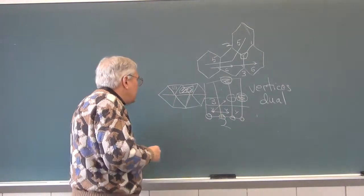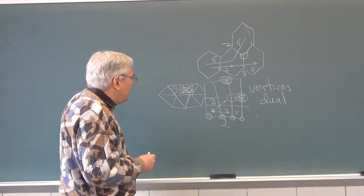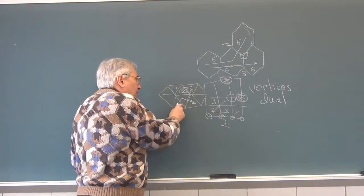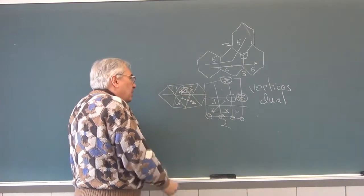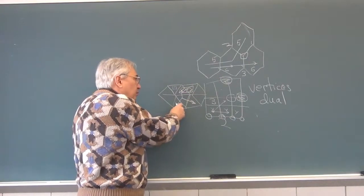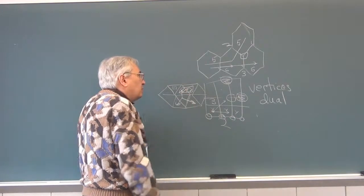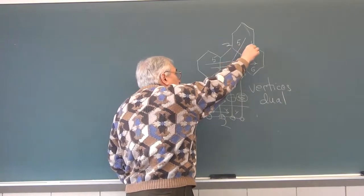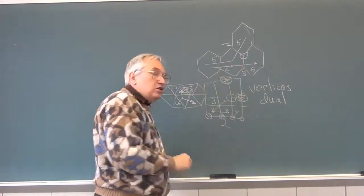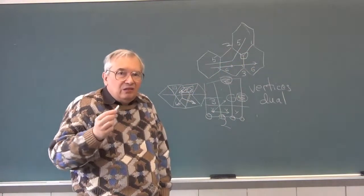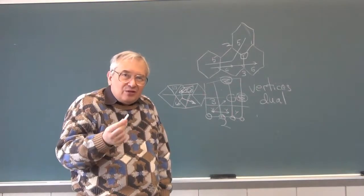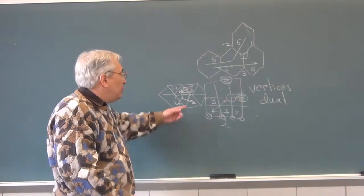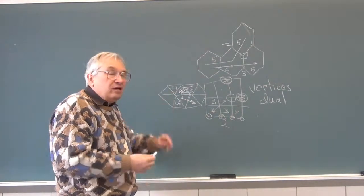You might ask, have we seen something with three neighbors? Looking at equilateral triangles: each triangle has three neighbors. So the lattice formed by equilateral triangles and the lattice formed by the hexagon vertices are actually the same — they may not look like each other, but they have all the same connectedness, assuming you can only move from triangle to triangle across an edge.